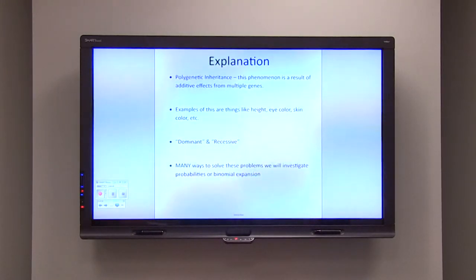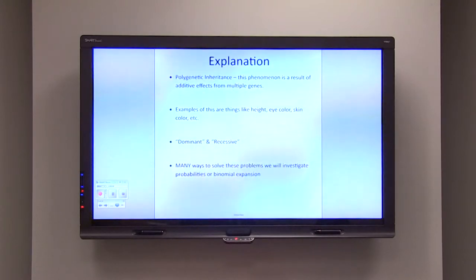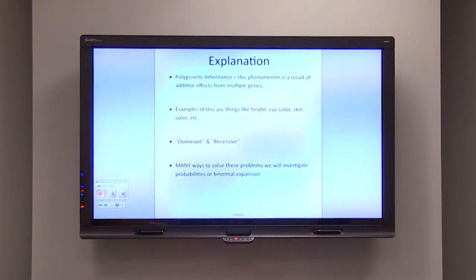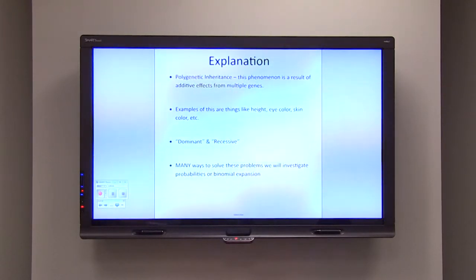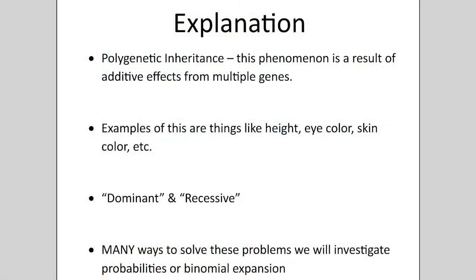So first let's explain what polygenic inheritance is. Thinking back to Mendel, we went over the inherited traits that were governed by either a type of dominance or a combination of dominance, like flower color, peapod color and texture. Lots of these traits vary in population because of the phenomenon known as polygenic inheritance. This phenomenon is a result of additive effects from multiple genes, meaning that things like height, eye color, and skin color are all coded for by varying alleles on different chromosomes.